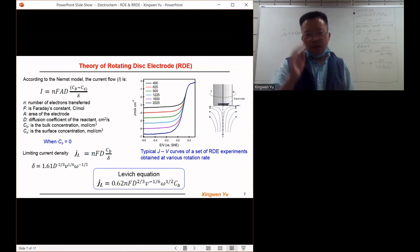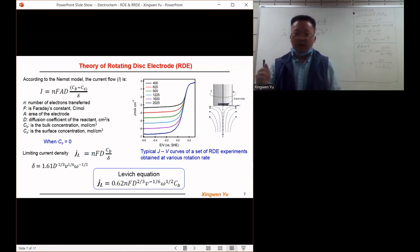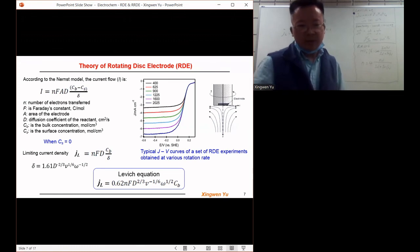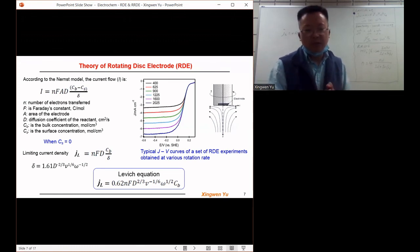That means in this case, the mass transfer process controls the reaction. Under high polarization conditions, the charge transfer is fast, so it can be assumed the charge transfer is fast and the total process is controlled by mass transfer.